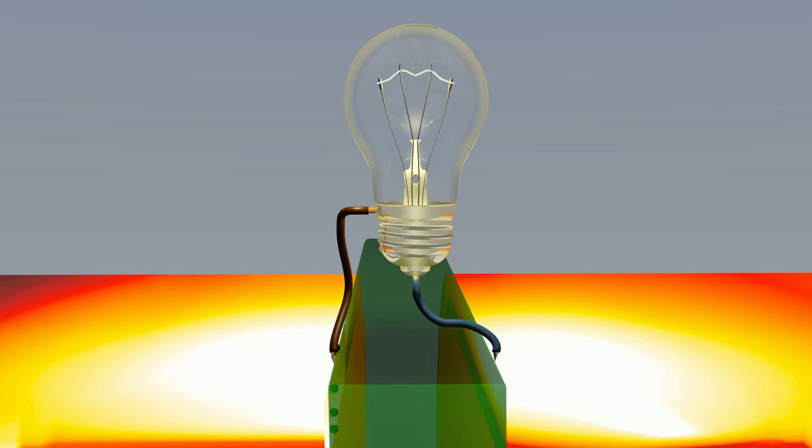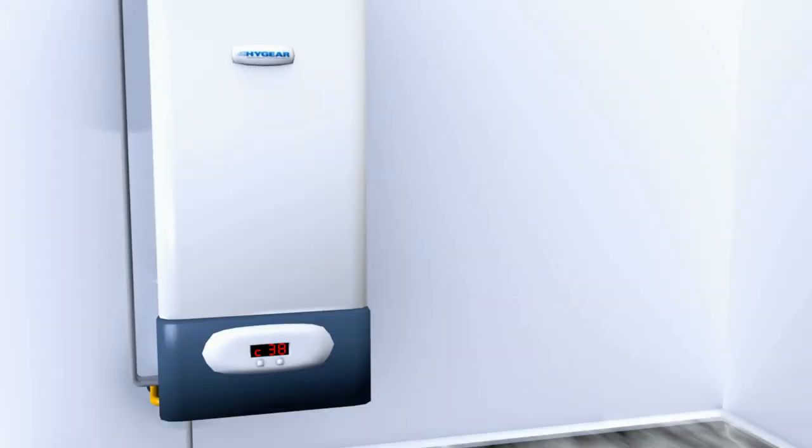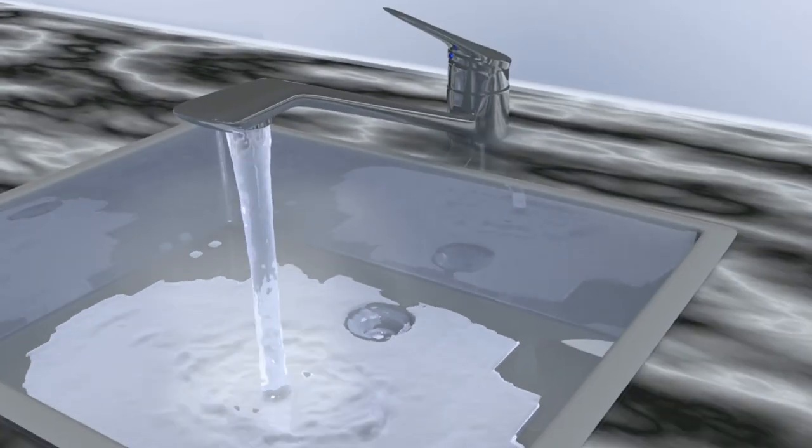These electrons cannot travel through the ceramic layer themselves, so they move back to the anode through the external circuit. In this way, they create a stream of electrons, well known as electricity.